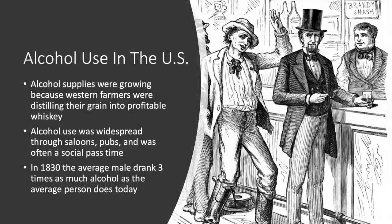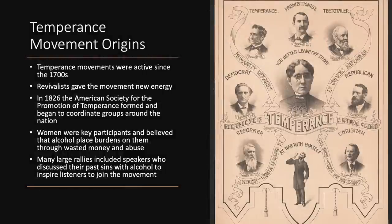During the early 1800s, alcohol supplies were growing, in part because Western farmers were distilling their grain into profitable whiskey. Alcohol was widely used in the East and West through saloons and pubs, and was often a social pastime used at political events and campaign rallies. In the 1830s, the average male drank three times as much alcohol as the average person does today. However, the Temperance Movement actually began in the 1700s, though revivalists gave it new energy.